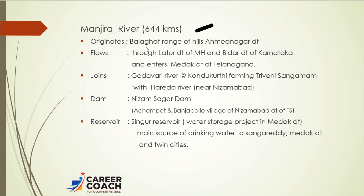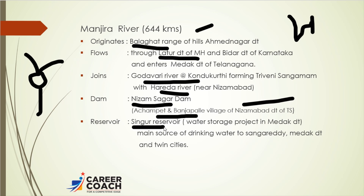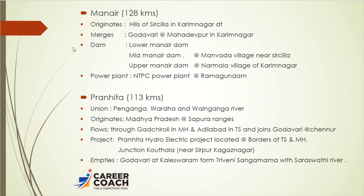The first Godavari tributary is the Manjira river. Its length is 644 kilometers; it originates in the Balaghat range of hills in Ahmednagar district, flows through Latur district of Maharashtra and Bidar district of Karnataka, and finally enters Telangana at Medak. It joins the Godavari river at Kundakurti, forming a Triveni Sangam with the Harida river. The most important dam on Manjira is the Nizam Sagar Dam, located at Achampet and Banjapalli village of Nizamabad district. The Singur reservoir's main purpose is to provide drinking water to Medak district and the twin cities of Hyderabad and Secunderabad.